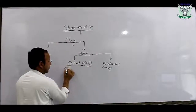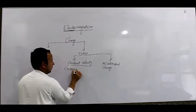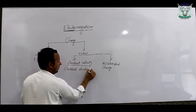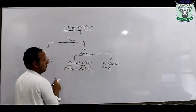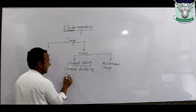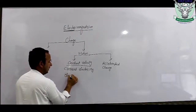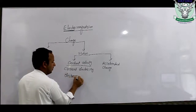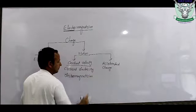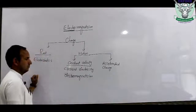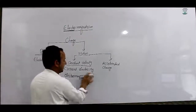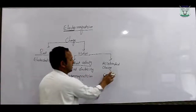The second year course covers current electricity, and the next chapter is electromagnetism, followed by electromagnetic waves with their properties at a high level.